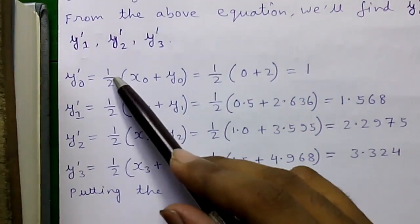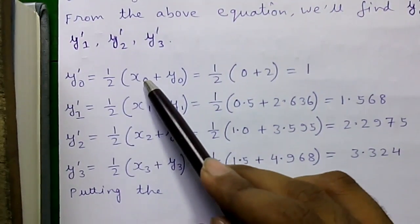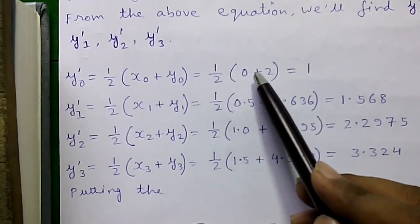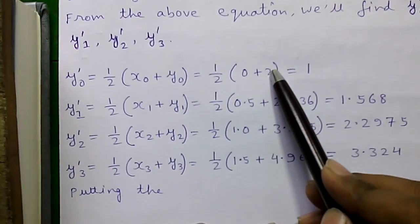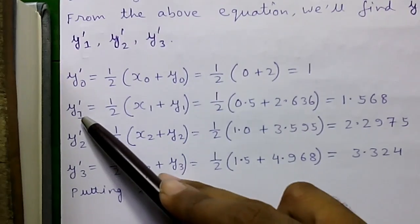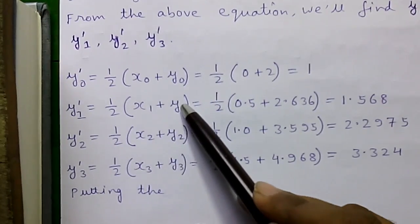So, y dash 0 can be calculated by using x0 and y0 value. Remember x0 is 0, y0 is 2. So, it will become 1.